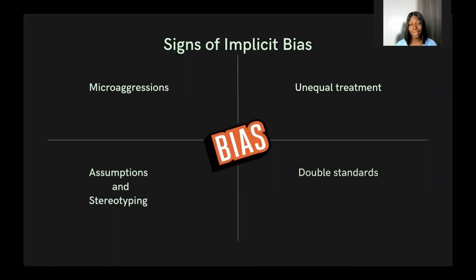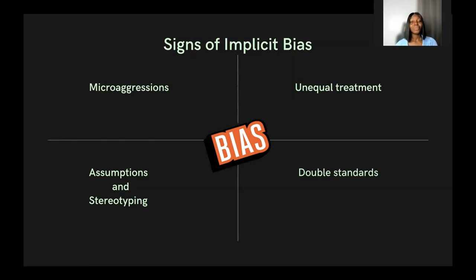There are different ways to identify whether you are on the receiving end or the perpetrating end of implicit bias. One sign is microaggression. Nobody will openly say, 'I'm not going to treat you fairly because I don't like how you look.' However, people exact these thoughts in the way they pass comments, give feedback, and reply to others in communities in ways that are considered microaggressive.